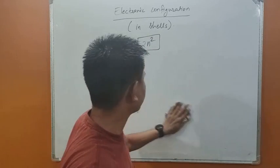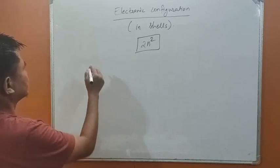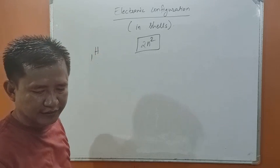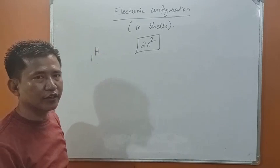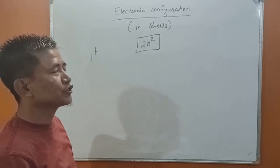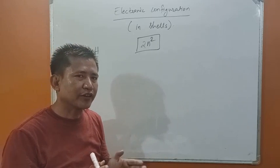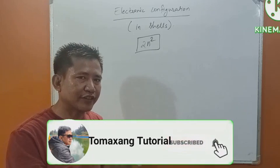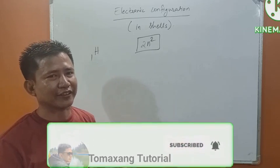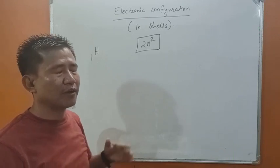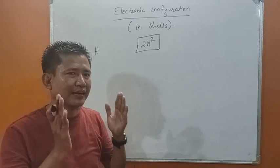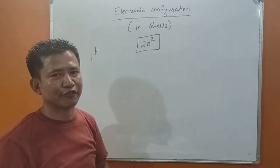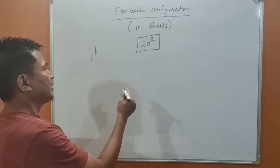Suppose we have an atom of hydrogen. The atomic number of hydrogen is 1, which means the number of protons present inside the nucleus of the hydrogen atom is 1.